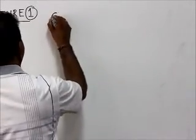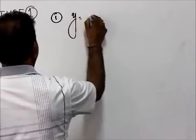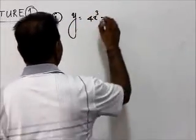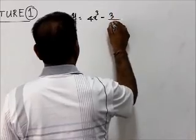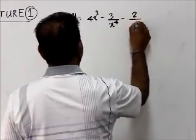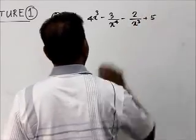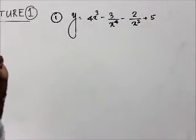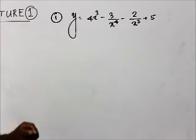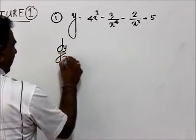The first one: we are given y = 4x³ - 3/x⁴ - 2/x³ + 5. We have to differentiate this, so we need to find dy/dx.